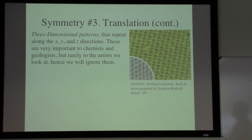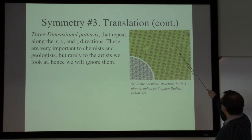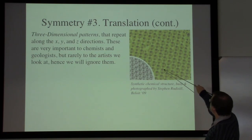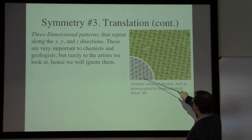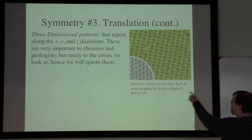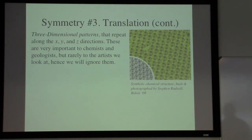There are also three-dimensional translation patterns, as seen in this synthetic chemical structure where hexagonal cells repeat right-to-left, up-and-down, and in layers going forward and back, creating a crystal structure. These kinds of designs are very important to chemists and geologists, but not nearly so often to the artists we're looking at, so we won't be studying them in any real depth.